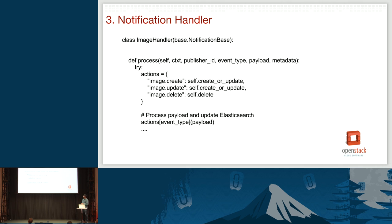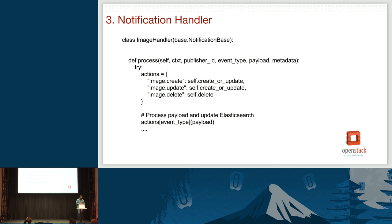For the notification handler, it specifies the events supported. You don't have to support everything — just the create, update, and delete events you care about. You get those events, get the payload, and serialize it back into Elasticsearch. It's similar to the bulk handler, just specific to a particular event like Nova instance creation or a Glance image metadata update.